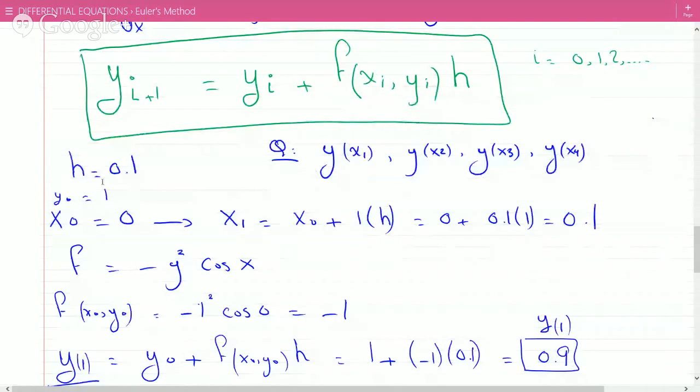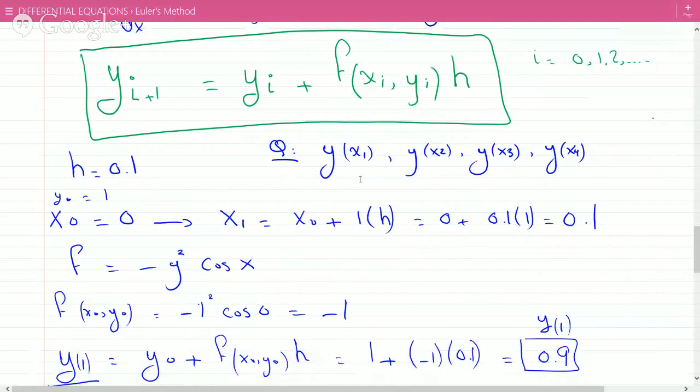You start with the initial value x0 which is 0. From that, x1 = x0 + h = 0.1. To find the value of f, plug it into the equation: -1² cos(0) = -1.